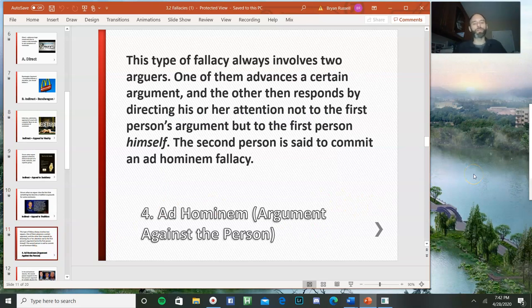So the next kind of fallacy that we're going to talk about are ad hominem arguments, which is a fancy way to say argument against the person. So this type of fallacy always involves two arguers. One of the arguers advances a certain argument and the other then responds by directing his or her attention not to the first person's argument, not by showing that their premises are false, or even if they're true, wouldn't lead to the conclusion, but rather directing their attention to the first person themselves. The second person in this case is said to commit an ad hominem fallacy.